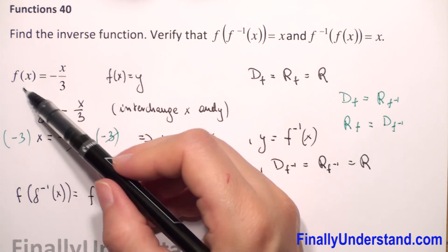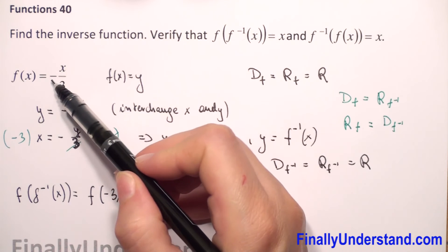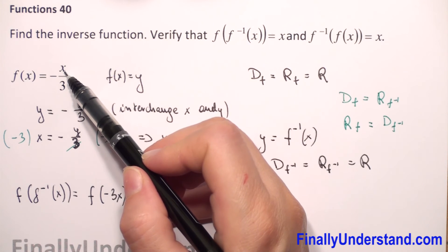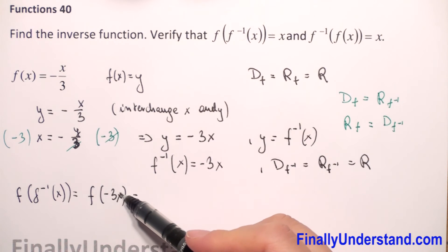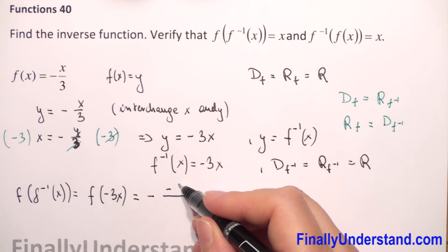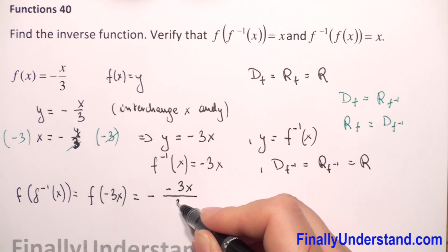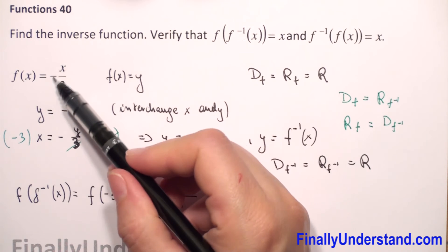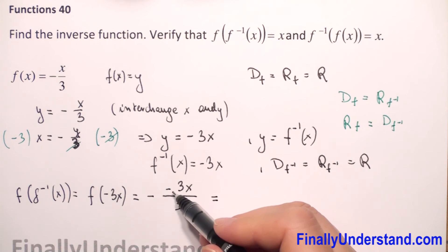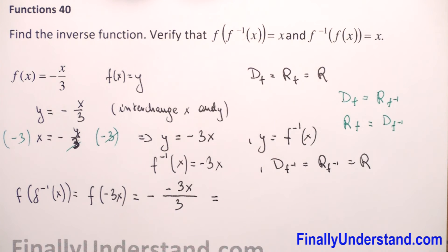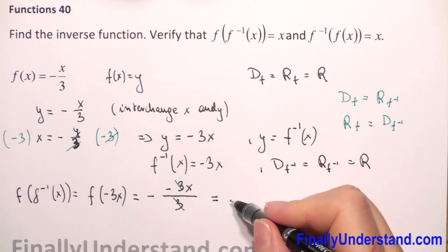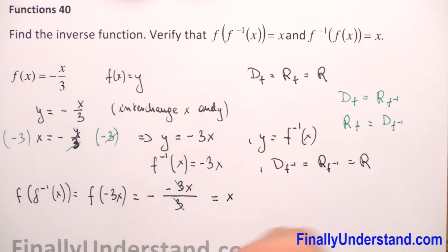We know the formula for f is negative x over 3. We substitute x with whatever is in parentheses. So we copy the negative sign, the numerator becomes negative 3x, and the denominator is 3. Negative 3 and 3 reduce, giving us x. The first composition is verified as equal to x.